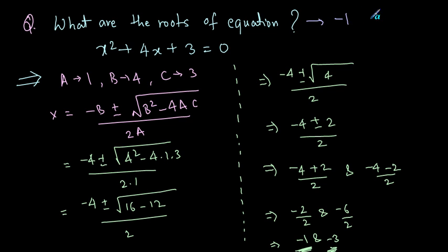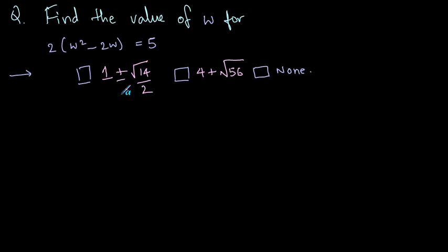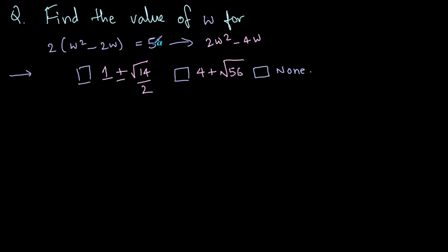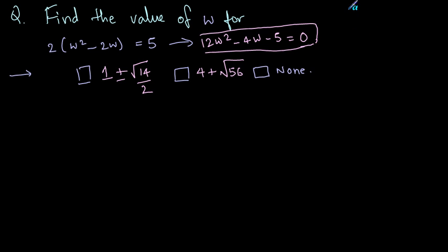Separating the plus and minus gives (minus 4 plus 2) divided by 2 and (minus 4 minus 2) divided by 2, which evaluates to minus 1 and minus 3. So the roots are minus 1 and minus 3. Now let's solve another question: find the value of w for 2(w squared minus 2w) equals 5. The equation is not in the standard format, so let's rearrange it.